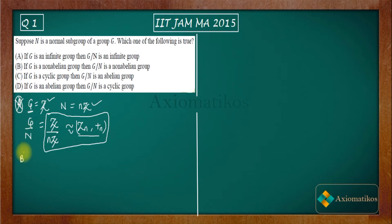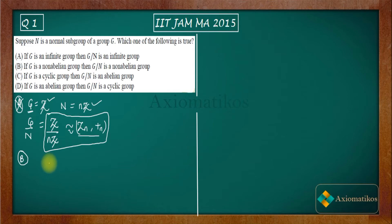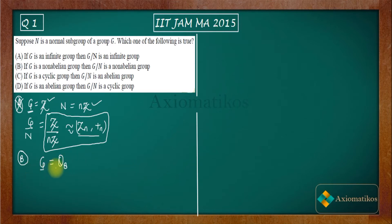Now let us focus on option B. Option B suggests that if G is a non-abelian group, then G by N is a non-abelian group — meaning if you consider any non-abelian group, its factor group will also be non-abelian. For this I will take a basic example of quaternions. This quaternion group is a very well-known group, so let us take the quaternion group as our example.